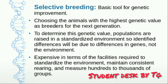The second technique or tool is selective breeding, which is a basic tool for genetic improvement. In selective breeding, we select the breed and choose animals with high genetic value as breeders for the next generation — animals that have a lot of good features and desirable qualities.